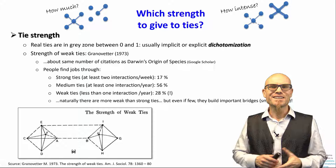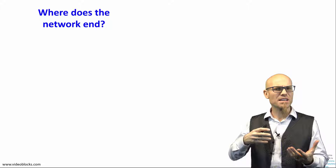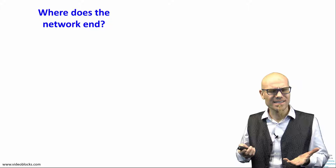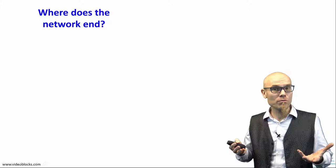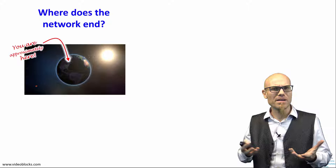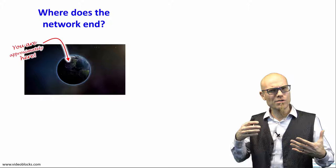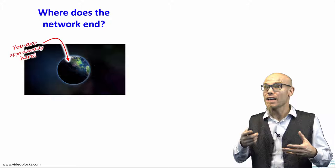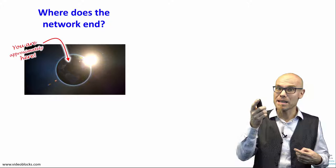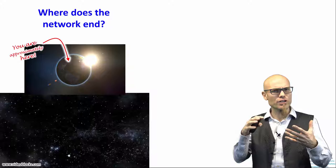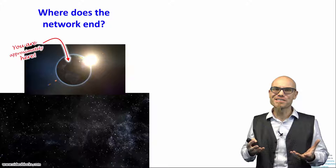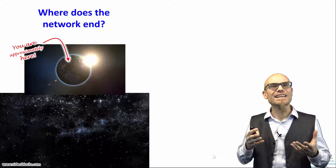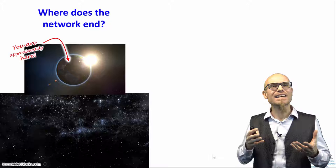Awareness that ties always have different degrees of strength leads to the question: where does the network end? If even very weak connections count, aren't we all connected on this globe? We share the same atmosphere, the same species, even the same galaxy. At some point you have to make a cut and decide where the network actually ends. That decision is again in the creativity of the scientist who models reality.